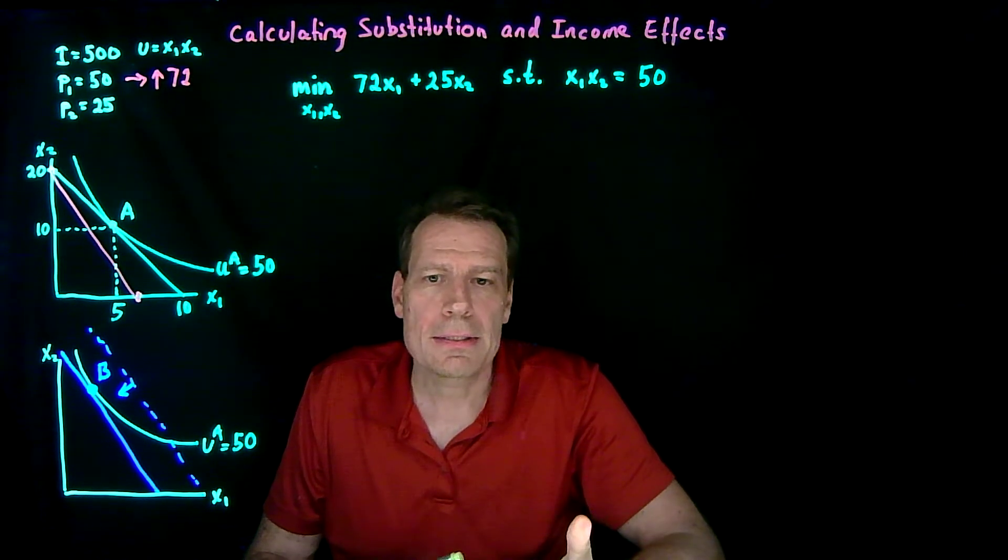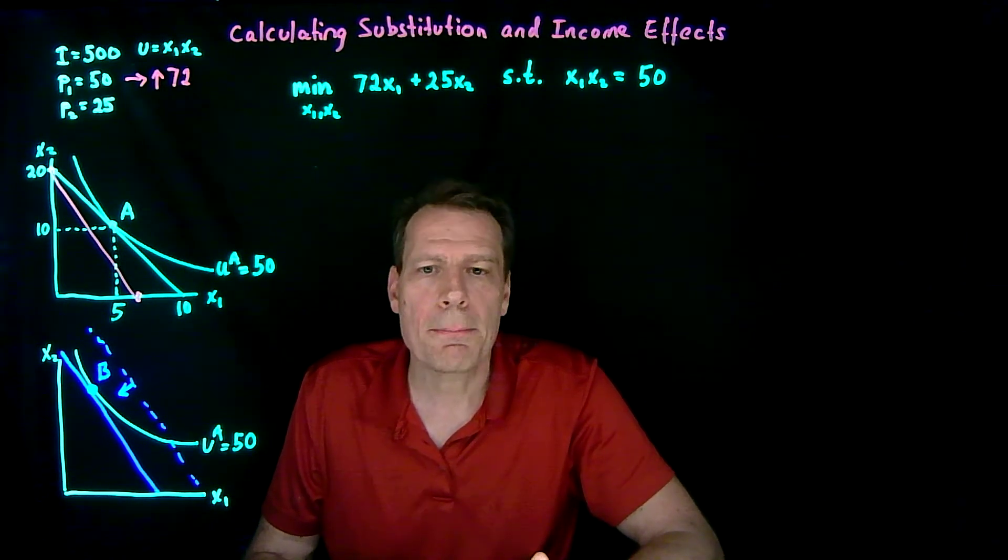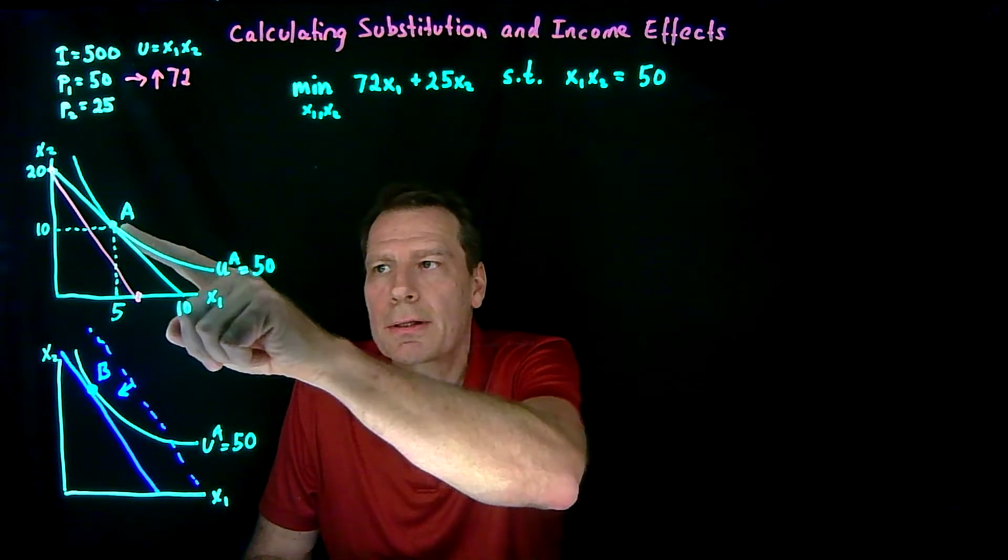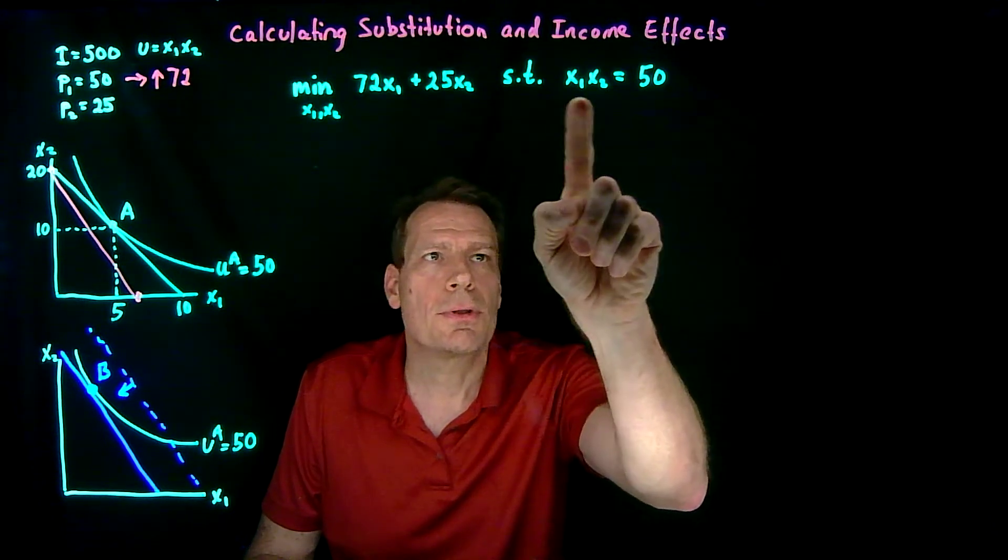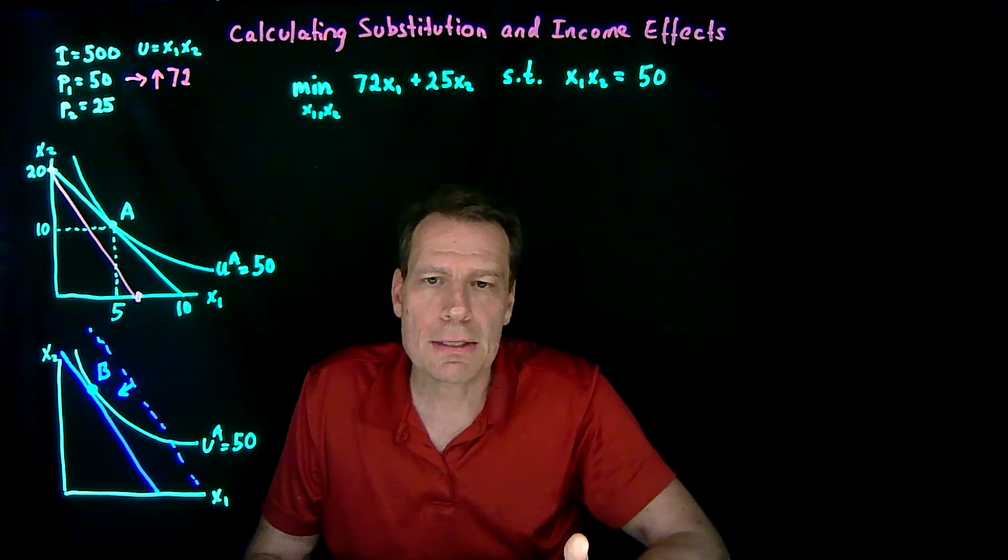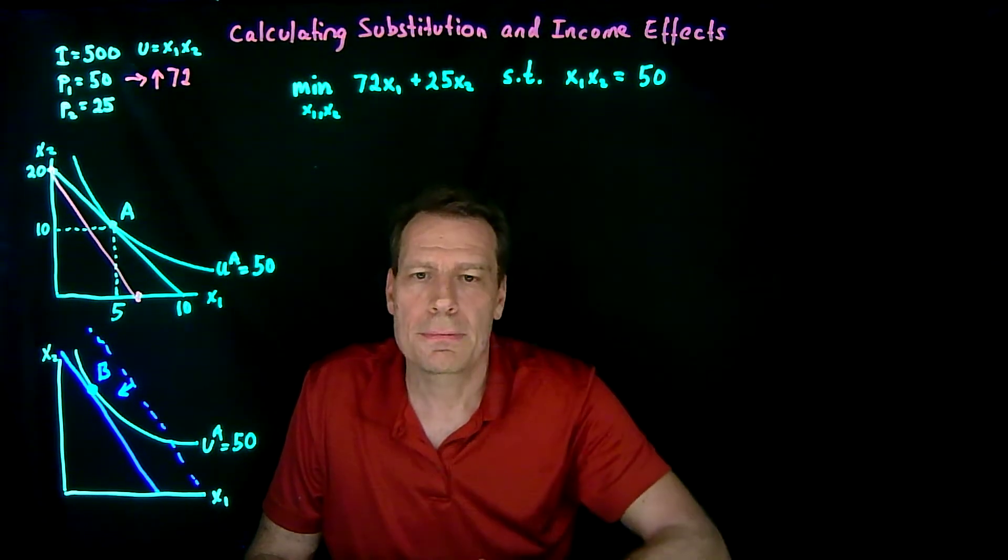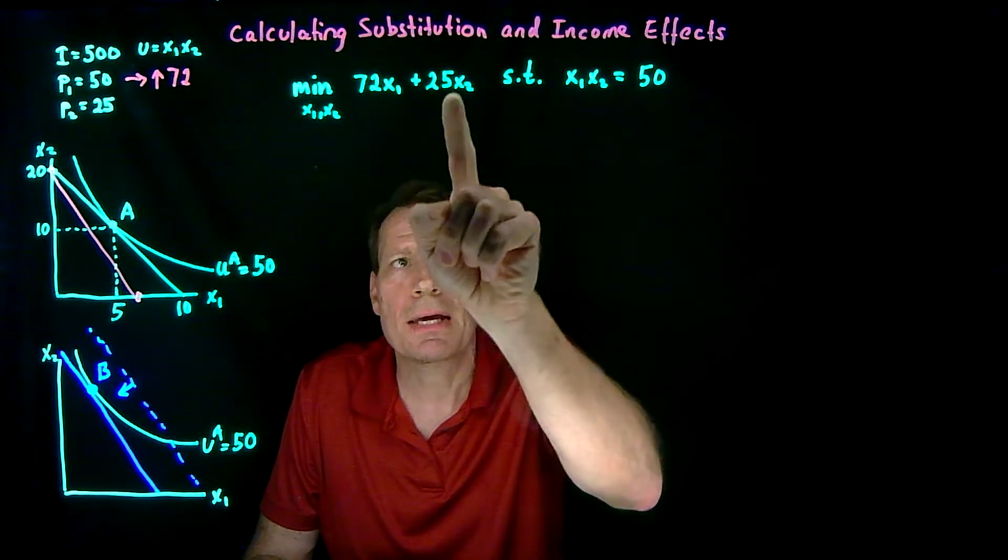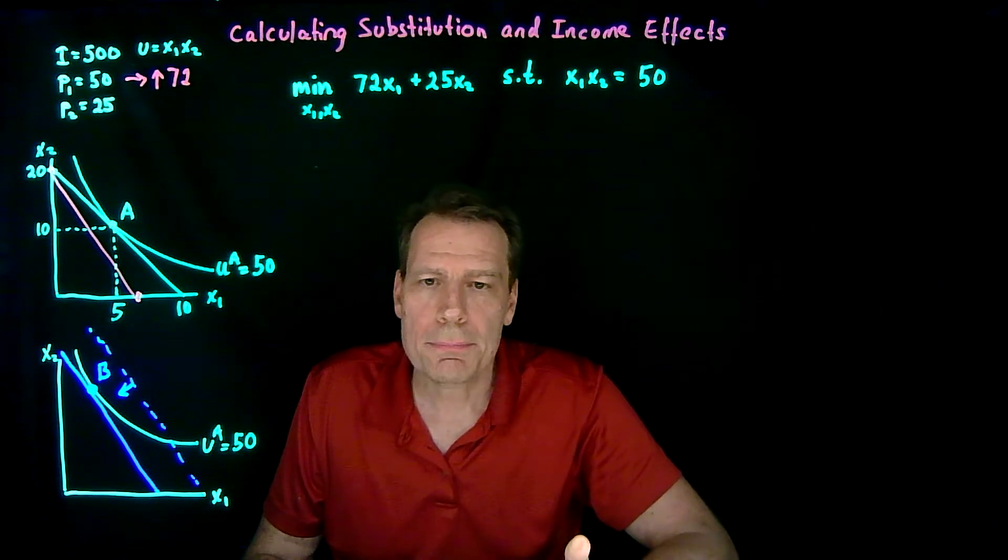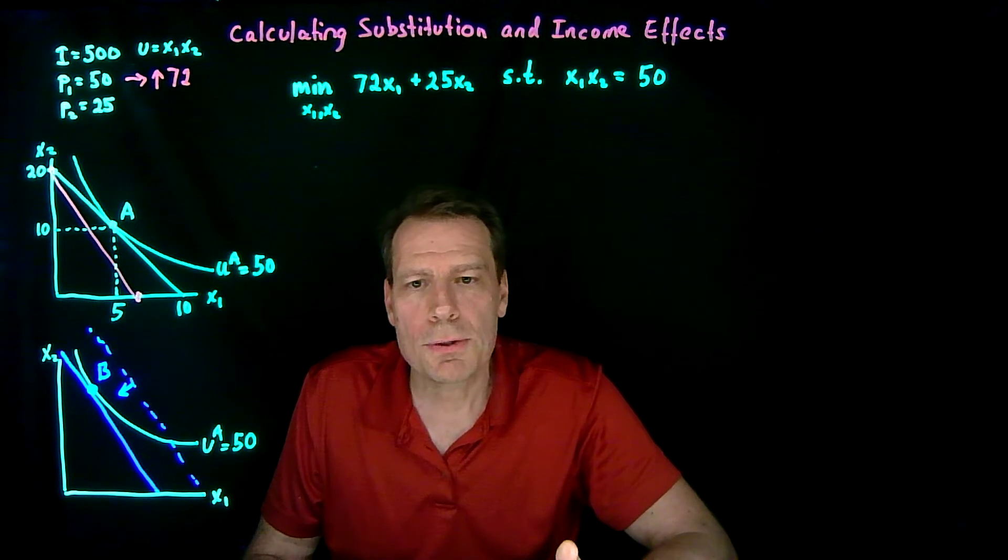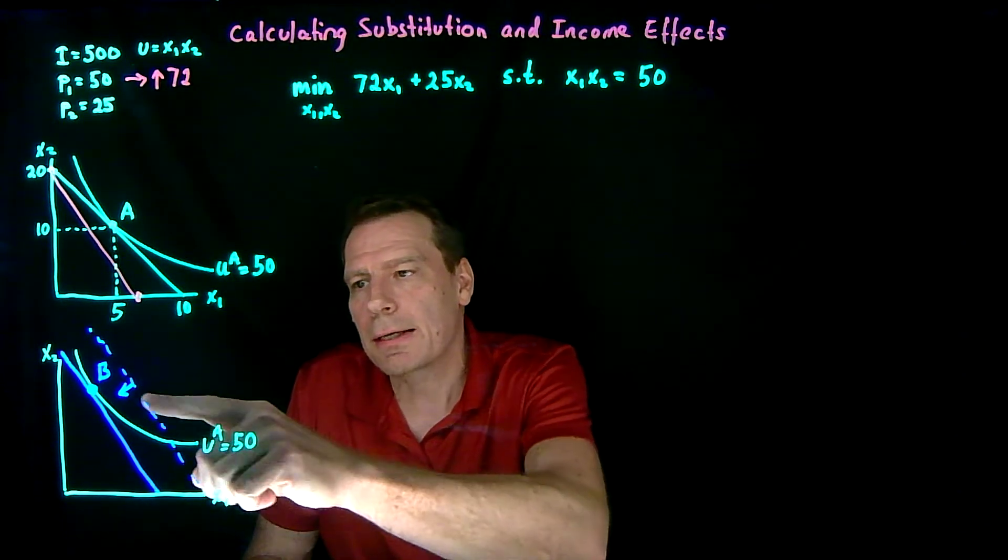So what we've set up is an optimization problem, except now it's a minimization problem instead of a maximization problem. When we first calculated bundle A, we said we want to maximize the utility subject to the budget constraint. Now the constraint is that we have to get to this indifference curve. So that's our constraint. And we're trying to minimize how much we spend in order to get you to that indifference curve. So it's just another optimization problem. And the same method we use to calculate the optimal consumption bundle is going to work to calculate this bundle B.